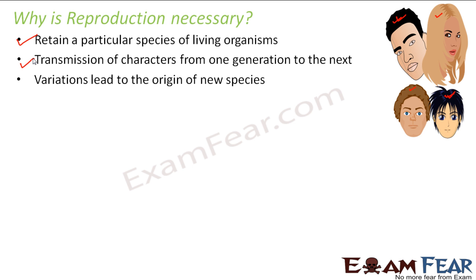Variations lead to the origin of new species. The second point was about inheritance, but you might also wonder how inheritance happens — how is it that the black hair trait got transferred from father to son? That is a very interesting topic, but in this lesson we will focus only on the process of reproduction. We will talk about inheritance and variations in our next lesson. For now, let me explain what variation means — variation means difference, something which is different.